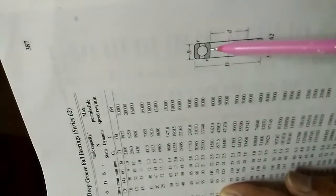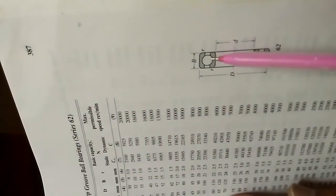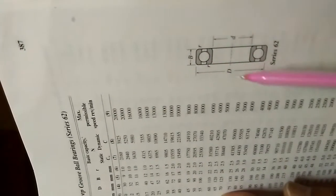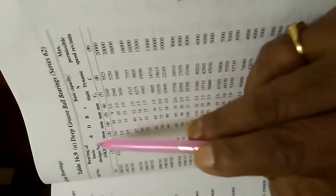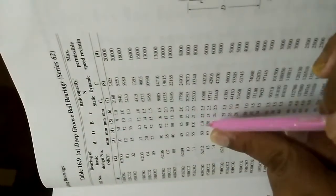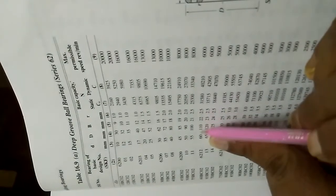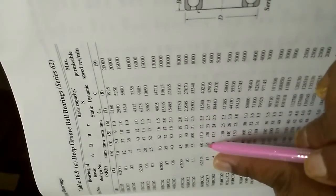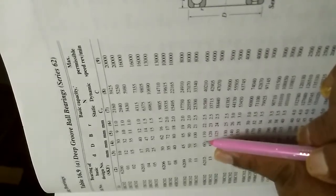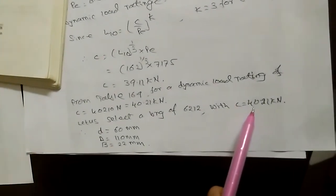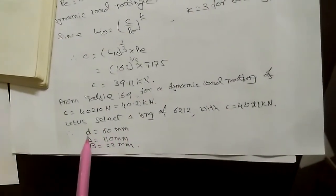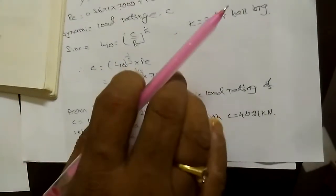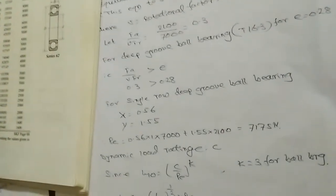From the catalog diagram, the bearing dimensions are: bore diameter d = 60 mm, outer diameter D = 110 mm, width B = 22 mm. This means the selected bearing 6212 is suitable for a shaft of 60 mm diameter. The design output must state the bearing number selected, its dynamic capacity of 40.21 kN from the catalog, and the bearing dimensions. Design of the bearing means selecting the bearing number using only three equations and the catalog.